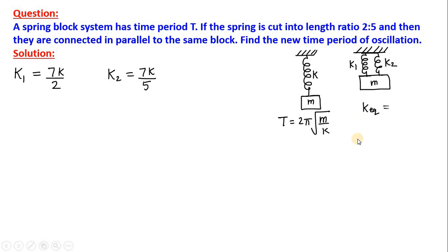We also know that when springs are connected in parallel, then the K equivalent is K1 plus K2. For series and parallel combination of springs kindly check my another video which is uploaded in the same playlist. The K equivalent for parallel combination will be K1 plus K2. Here are the values of K1 and K2 obtained by the shortcut trick just now I told you. So, let us add both of them 7K by 2 plus 7K by 5.